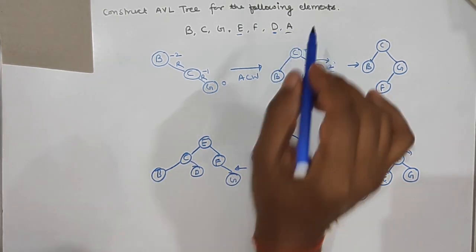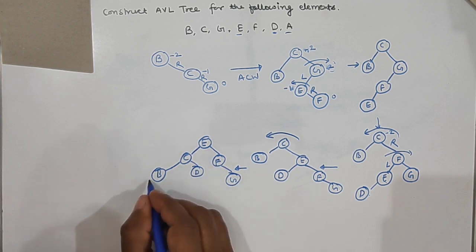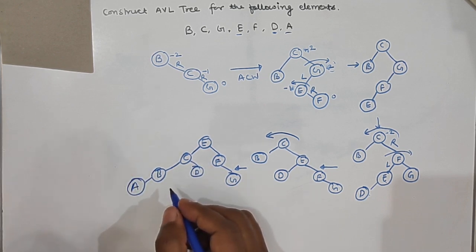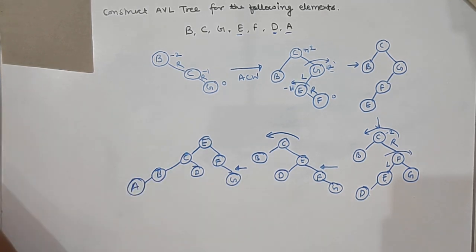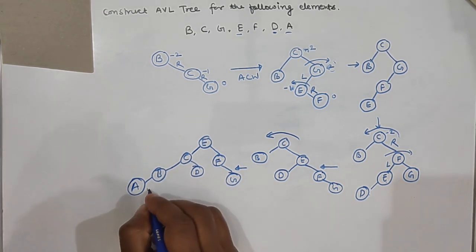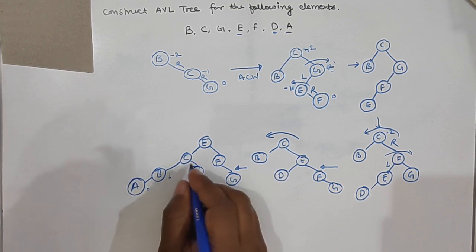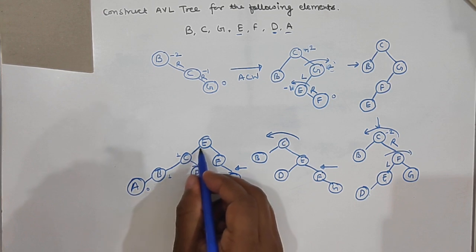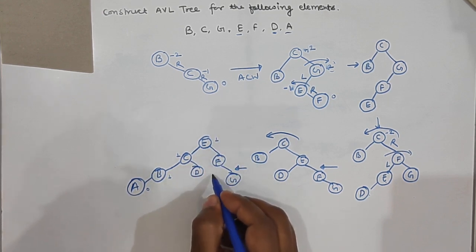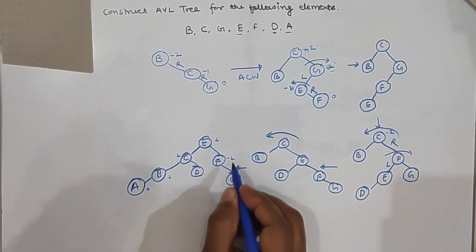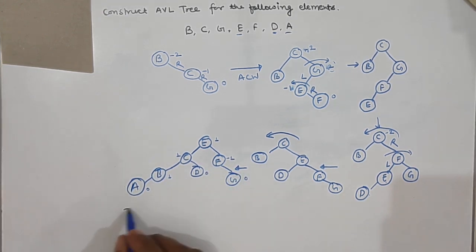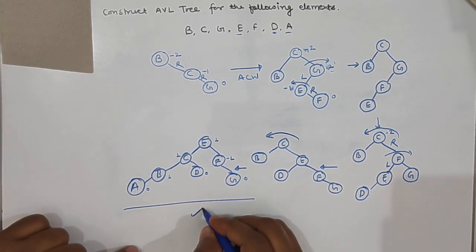Next we insert a. A is inserted and we check the balance factors. All leaf nodes have balance factor 0. A has 0, this node has 1, this node has 2 minus 1 = 1, then 3 minus 2 = 1, then 0, -1, and 0. All nodes have a balance factor of 0, 1, or -1, so this is the final balanced tree.